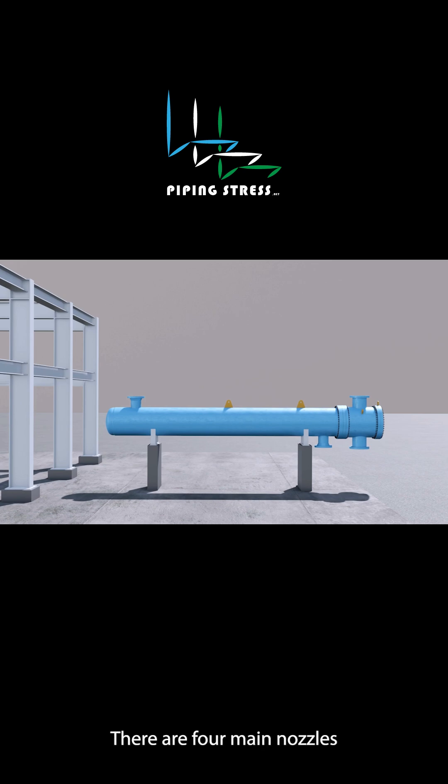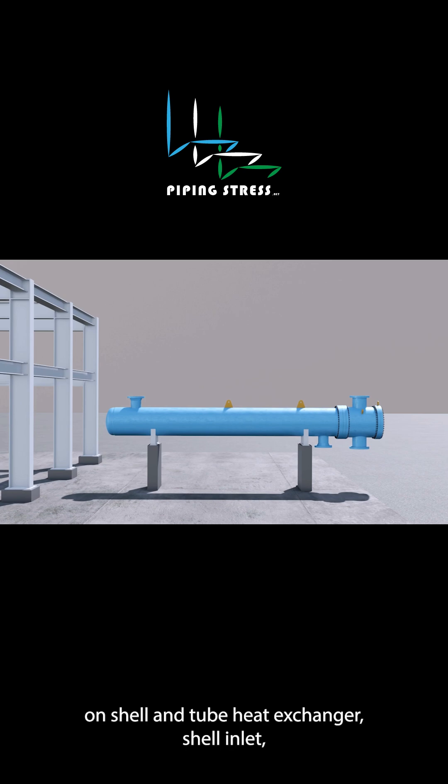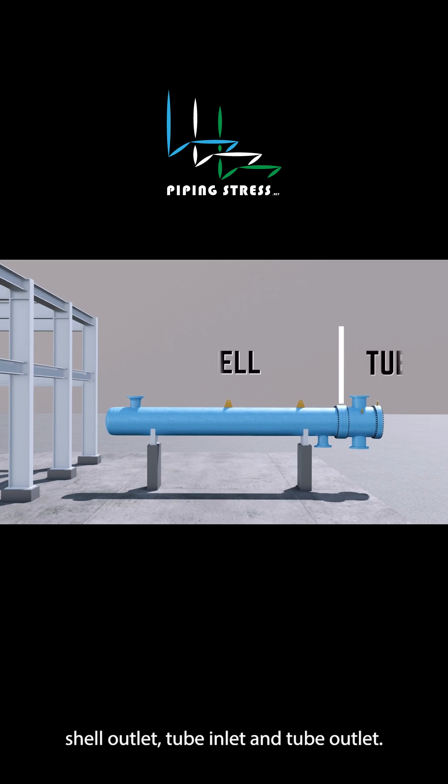There are four main nozzles on a shell and tube heat exchanger: shell inlet, shell outlet, tube inlet, and tube outlet.